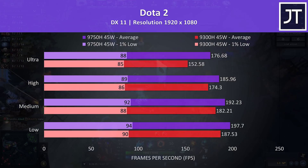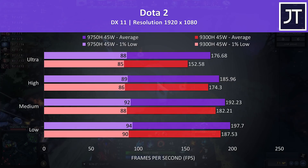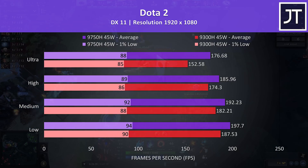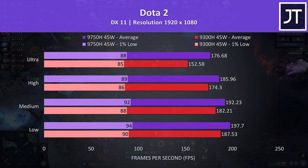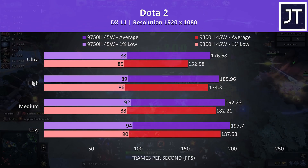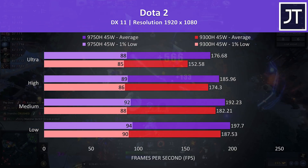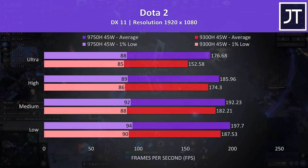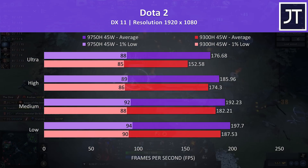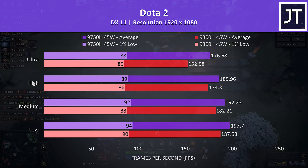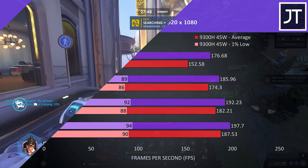Unlike most other games I've actually found the gap to widen as we step up to higher setting levels. By the time we're at ultra settings the i7 was actually 16% faster than the i5 in terms of average FPS, though the 1% low was only 3.5% faster.